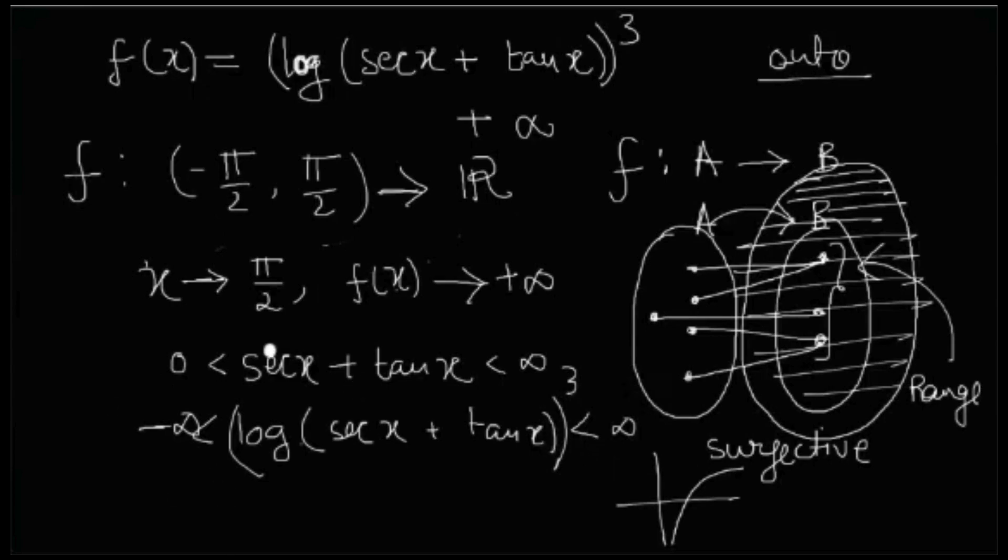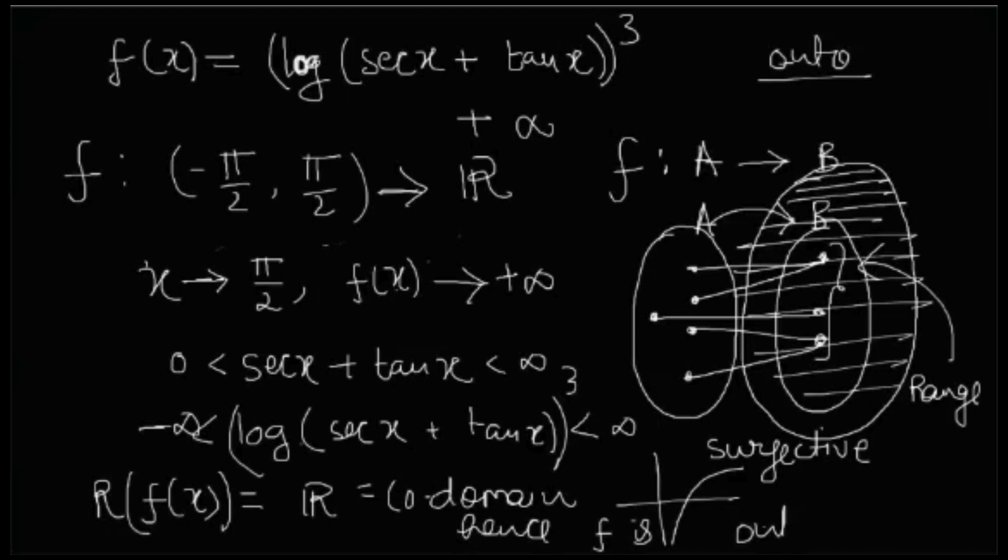So basically what you showed is the range of f of x is R, which is the codomain. Correct. Hence, f is onto. OK. Yeah. Makes sense.